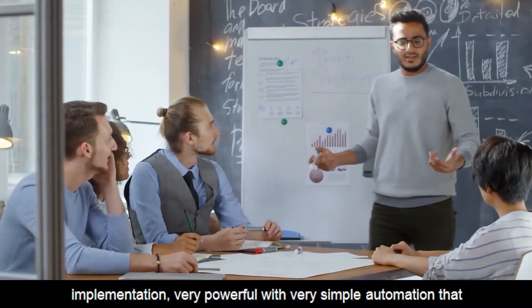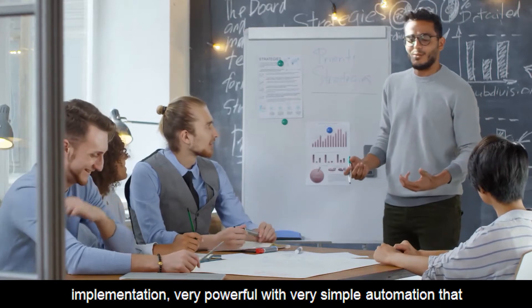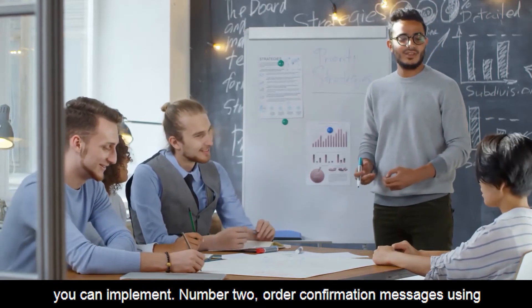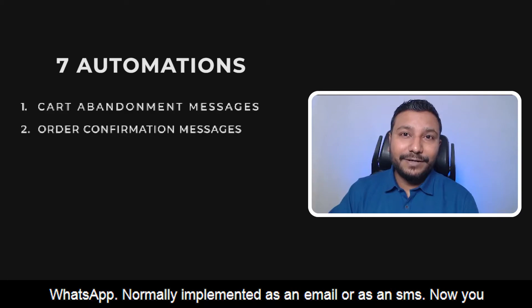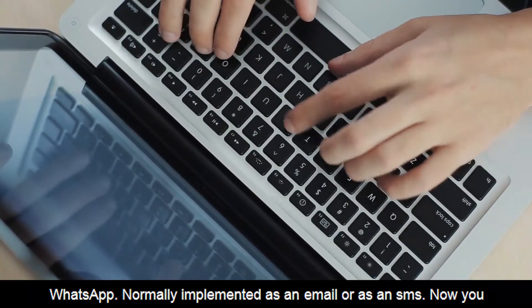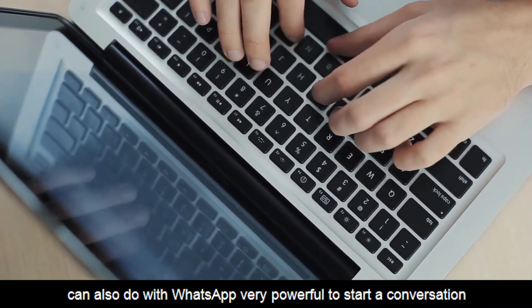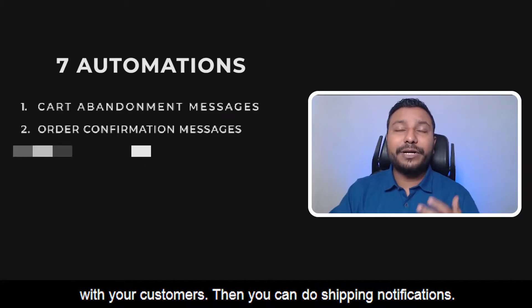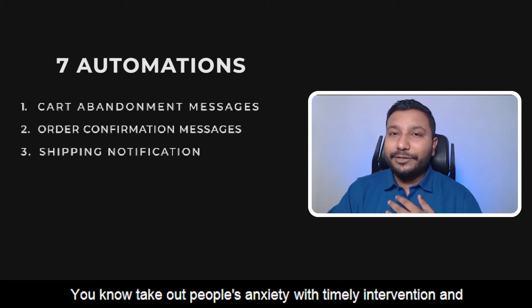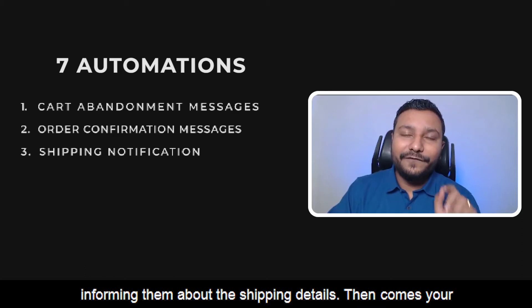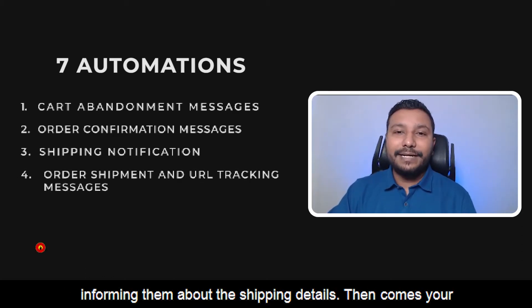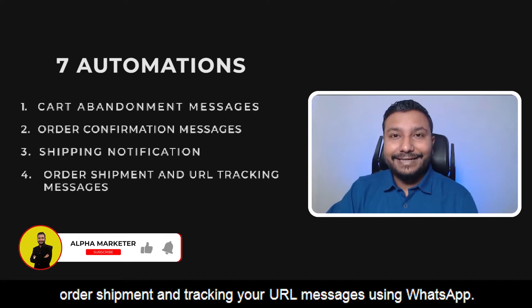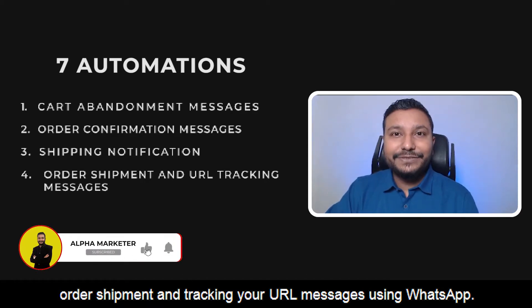Number two is order confirmation messages using WhatsApp — normally implemented as an email or SMS, now you can also do it with WhatsApp, which is very powerful for starting a conversation with your customers. Then you can do shipping notifications to take away customers' anxiety with timely intervention, informing them about the shipping details. Number four is order shipment and tracking URL messages using WhatsApp.